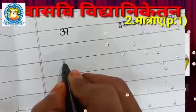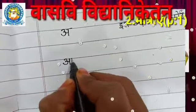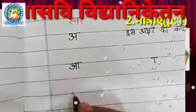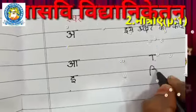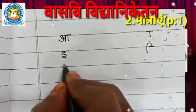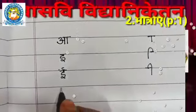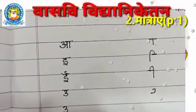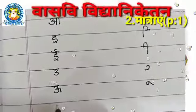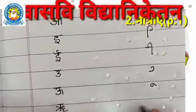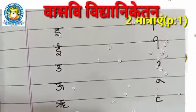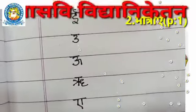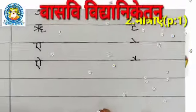Ok, first one - 'a' - is akshar ki koi maatra nahi hoti. Just illa raasta. Next: aa - aa ki maatra - akar. Chhoti i - chhoti i ki maatra - ikar. Chhoti u, chhoti u ki maatra - badi u, badi u ki maatra.